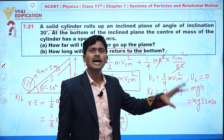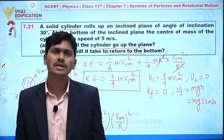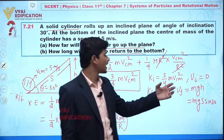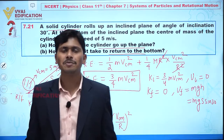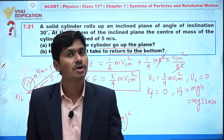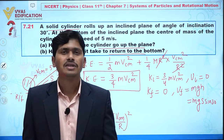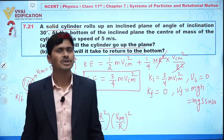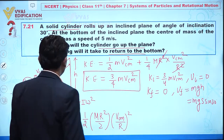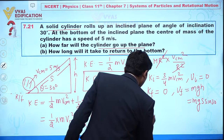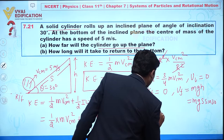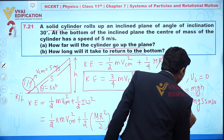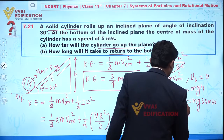Since the cylinder moves under the influence of gravitational force — a conservative force — all its kinetic energy converts into potential energy. So we can write: ¾mv_cm² = mgs/2.